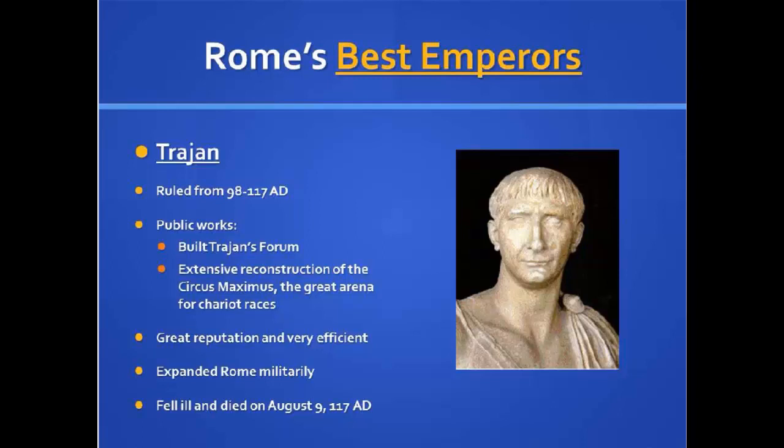Trajan ruled from 98 AD to 117 AD. He built the new forum, which we'll see in a moment, and created extensive restructuring of the Circus Maximus — the great arena for chariot races. He had a great reputation for being very effective and expanded Rome militarily. He fell ill and died August 9th, 117 AD. Trajan was very loved. He liked building but was more interested in renovation and reconstructing, making things function the way they were supposed to — holding on to what he already had rather than expanding too much.